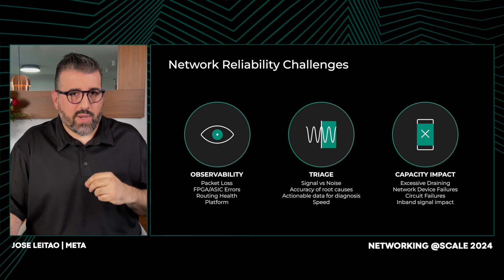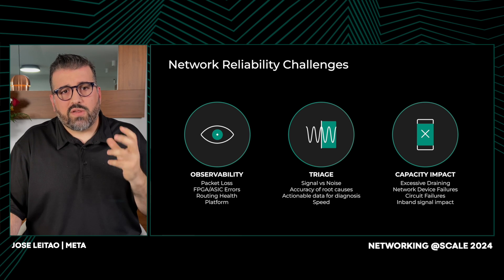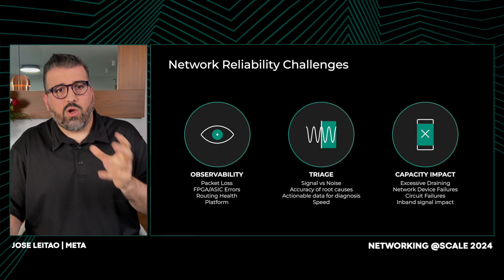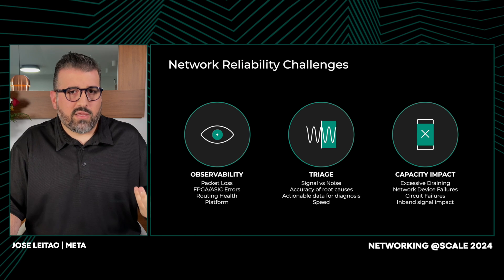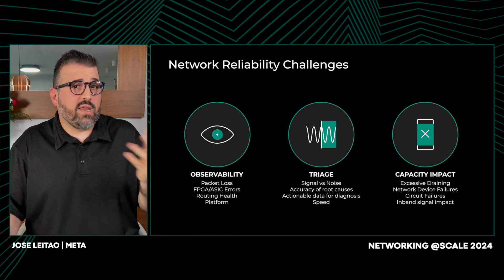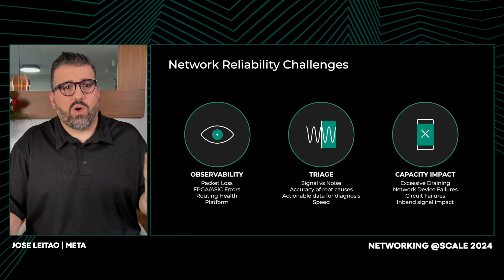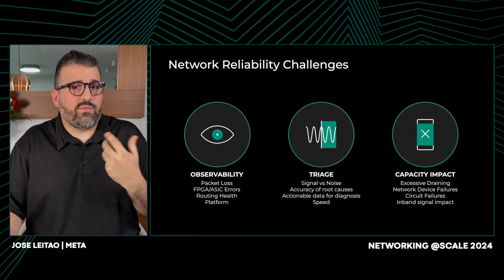Lastly, we have capacity impact, where balancing capacity with reliability presents its own set of challenges. While our front-end network is generally over-provisioned to prevent service impact, the backend network directly ties capacity to performance. Any loss in capacity on the backend can drastically impact QPS and lead to potential job failures. Proactively managing these failures involves draining network elements that show any sign of degradation, effectively removing capacity from production. It's worth noting that these challenges are common to front-end and backend networks, but the non-blocking and latency-sensitive needs of AI clusters have been a forcing function for us, pushing our teams to evolve and scale those solutions. With this, I will hand off to Rob.